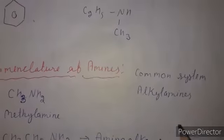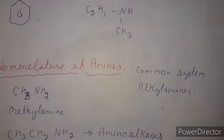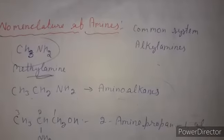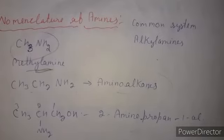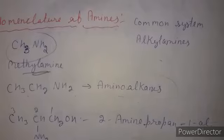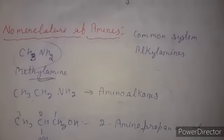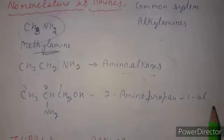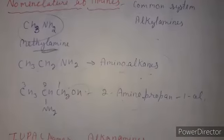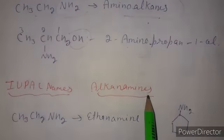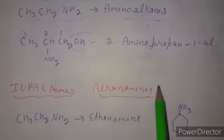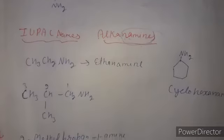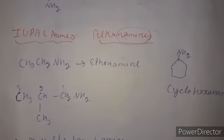Now we discuss nomenclature of amines. In the common system, amines are called alkyl amines — for example, methylamine and ethylamine. In another system, primary amines use the prefix 'amino', giving names like aminoalkanes or 2-aminopropan-1-ol, where alcohol is the principal functional group. For IUPAC names, the suffix '-e' of the parent alkane is replaced by '-amine', giving names such as ethanamine, cyclohexanamine, and 2-methylpropan-1-amine.